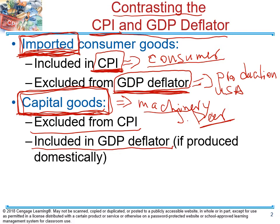But when capital goods are produced on the territory of the United States, they're included in the GDP deflator. For example, capital goods can include military equipment. When we produce a military helicopter and the price changes, that's not reflected in the consumer price index because a typical consumer doesn't purchase a military helicopter. But we will see that change in the GDP deflator.